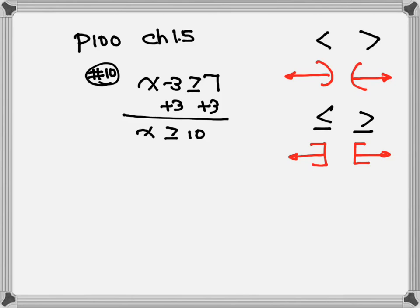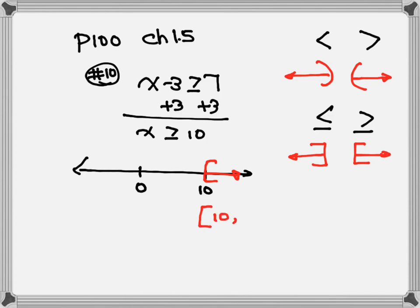After you solve, let's draw this. Draw your number line and always indicate zero. Positive 10 is on the right-hand side of zero, so put 10 over here. For this we have an equal sign, so we use a bracket on the 10 and draw the arrow to the right. The last step is the interval notation. Follow the graph: bracket, 10, going to the positive side — no stop — so positive infinity. Draw your infinity sign, and on the infinity side always use parentheses.